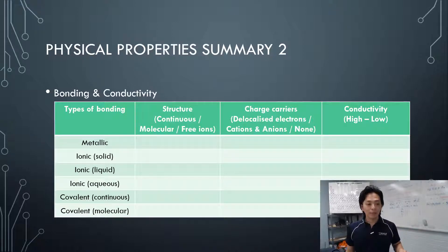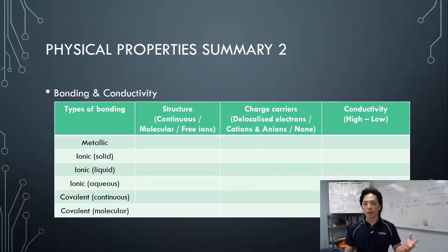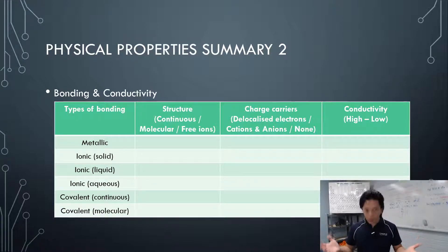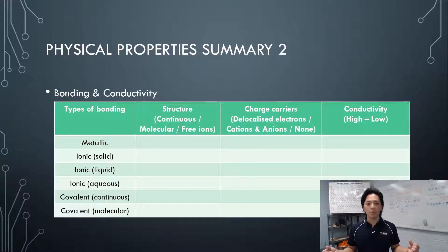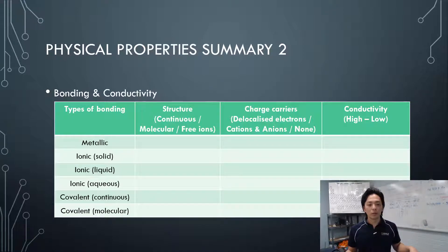For ionic solid — like sodium chloride — the structure is continuous. Are there any charge carriers? No, because ions cannot move freely. Conductivity is very low for ionic solid.